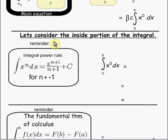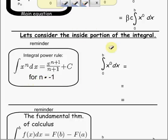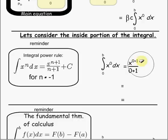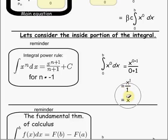Let's consider the inside portion of this integral. The integral power rule says that if we're integrating x^n dx, that is equal to x^(n+1) over (n+1) plus C, for n not equal to negative 1. So integrating from zero to b, x to the zero power dx, we get x^(0+1) over (0+1), which equals x to the first power over 1, which is simply equal to x.